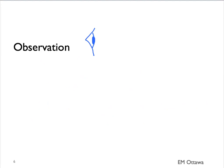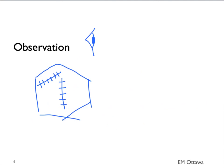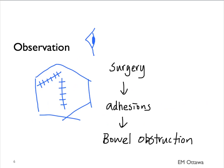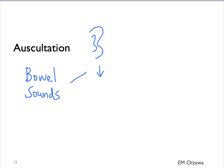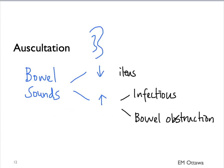First, observation. The main observation would be looking for surgical scars, which tell you what surgery the patient has had in the past. Previous surgery increases the risk of adhesions and bowel obstruction. We also want to look out for hernia. For auscultation, we'll be listening for bowel sounds, which can either be decreased or increased. Decreased bowel sounds can indicate an ileus, a nonspecific finding associated with multiple abdominal conditions. Increased bowel sounds suggest infectious causes such as gastroenteritis or bowel obstruction.